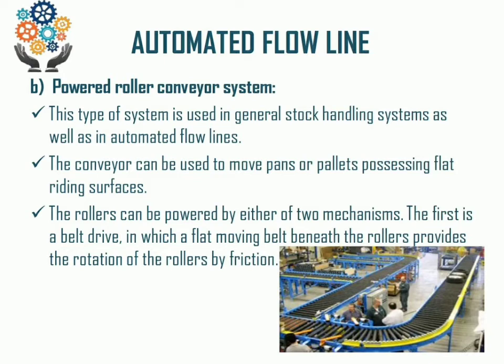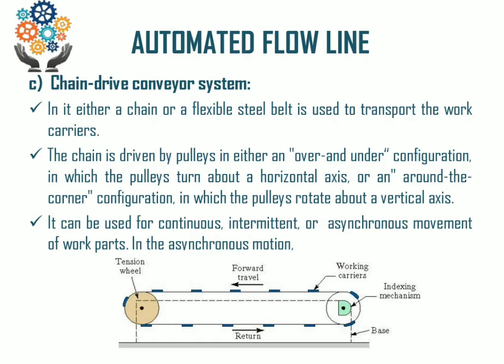The last linear type is the chain drive conveyor system. In the chain drive conveyor system, chain conveyors use either a chain or a flexible steel belt to transport work parts from one place to another. The chain drive is pulled in one direction over and under. The configuration is pulled under the horizontal axis and around corners. It can be used for continuous, intermittent, or asynchronous movement.